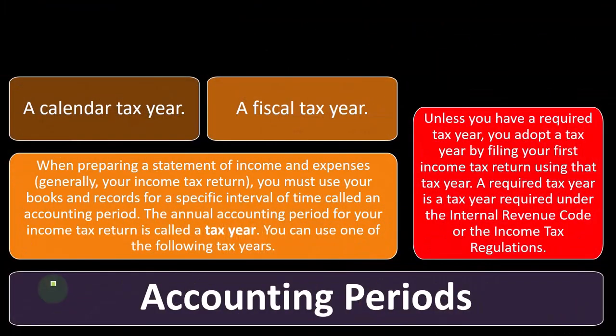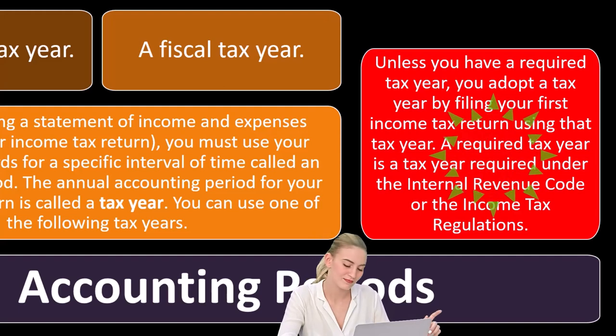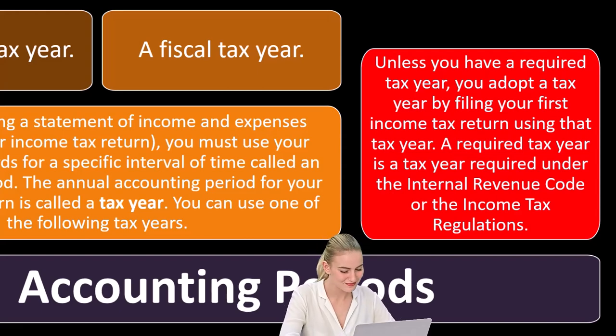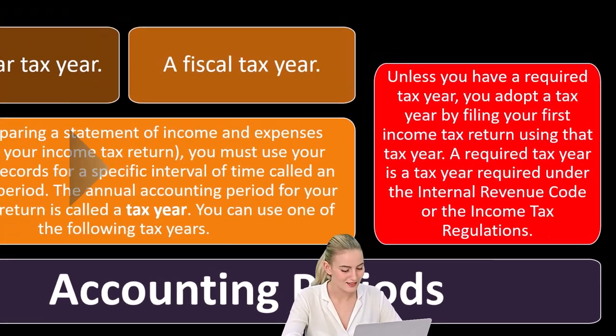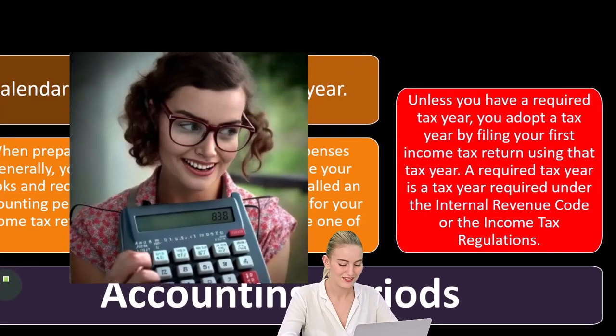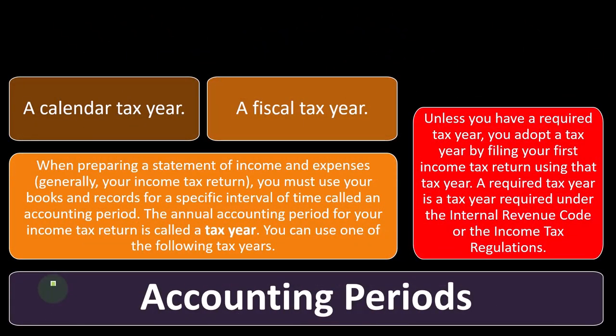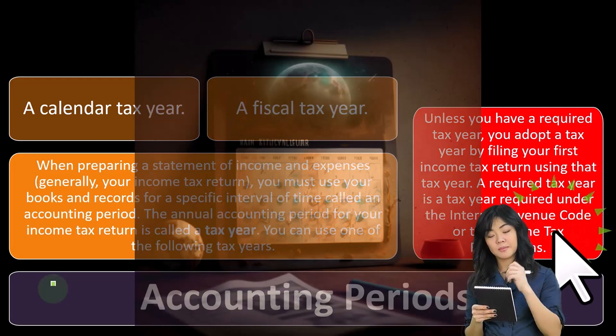Unless you have a required tax year, you adopt a tax year by filing your first income tax return using that tax year. You want to make sure that you get this right from the start. A lot of small businesses that are sole proprietors will be a calendar year, but if you're going to make a change, you want to research it and try to get off on the right foot, because it might be a little bit difficult to change after you've already started adopting one particular calendar year.